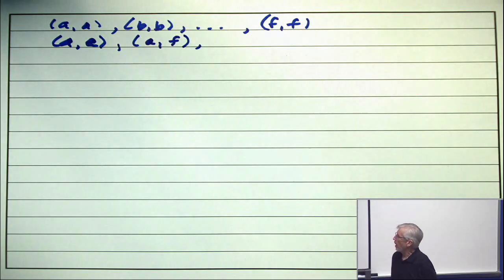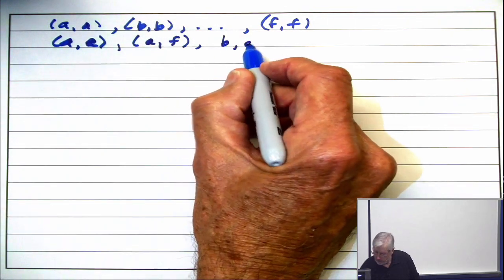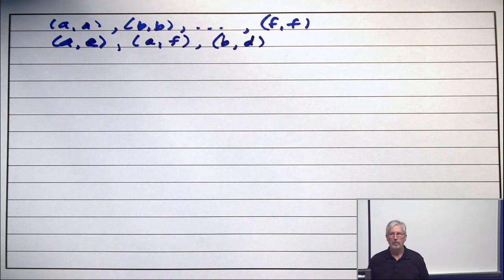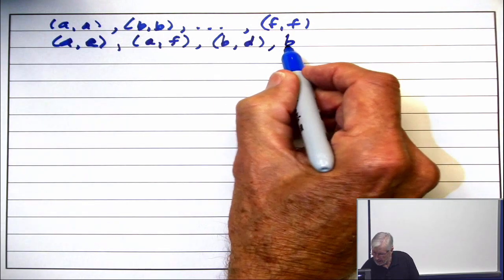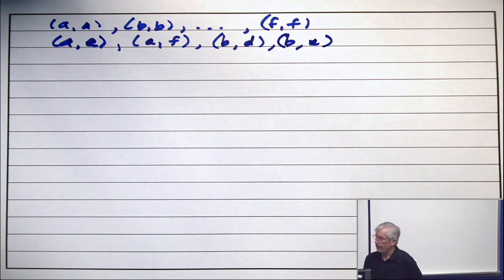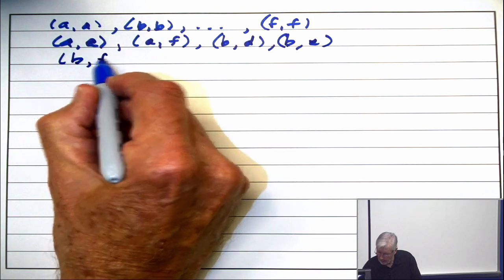Should I write B comma D? Yes. Should I write B comma E? Yes or no? Yes. B comma E. Should I write B comma F? Yes.